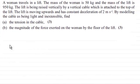Hi there. Now for this question we're told that a woman travels in a lift. The mass of the woman is 50 kilograms and the mass of the lift is 950 kilograms. The lift is being raised vertically by a vertical cable which is attached to the top of the lift. The lift is moving upwards and has a constant deceleration of 2 meters per second squared.